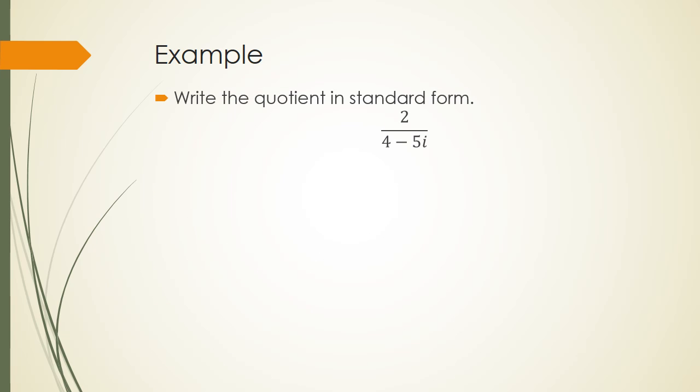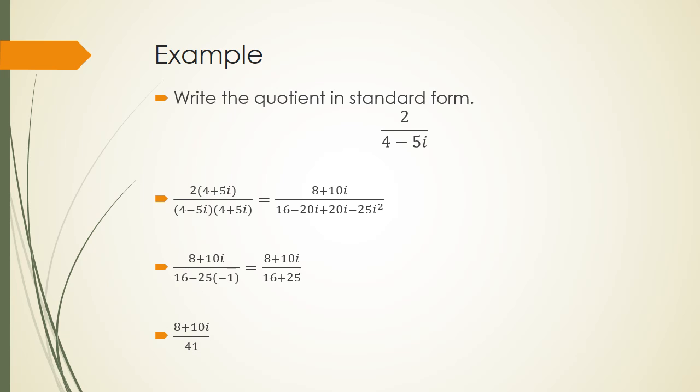Okay, pause the recording and try this example. Remember, you want to remove the i from the denominator, so you will need to multiply both numerator and denominator by the complex conjugate. We're multiplying top and bottom by 4 plus 5i, and we distribute on the top. We use FOIL in the denominator. We remember that i squared is negative 1, and we end up with 8 plus 10i over 41. Now technically, this is not in standard form. Standard form, we need to actually split it up and make it 8 over 41 plus 10i over 41.